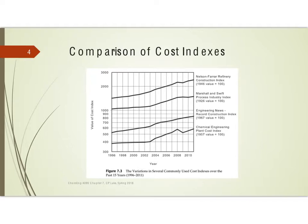Now these indices were all started at different times. Nelson-Farrar started in 1946, and that's when they set a value of 100. Marshall-Swift started in 1926. The CEPCI started in 1957 with a value of 100. And you can see here in this picture that it's up over 500 — and in fact it's quite a bit over 500 today.